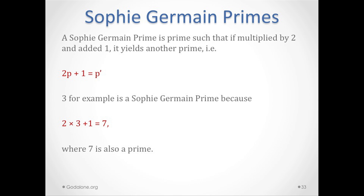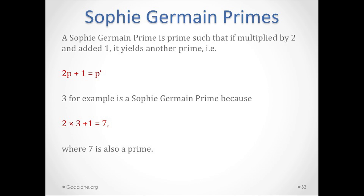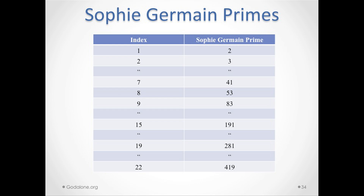Sophie Germain primes are primes such that if you multiply the prime by 2 and add 1, the result is also prime. For example, 3 times 2 plus 1 equals 7, so 3 is a Sophie Germain prime. Interestingly, some Sophie Germain primes share indices with twin primes. The 19th Sophie Germain prime is 281, and the 19th pair of twin primes is 281 and 283. Similarly, the 22nd is 419 and 421.